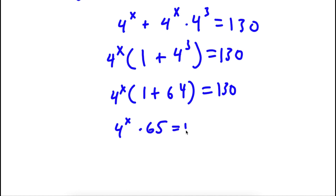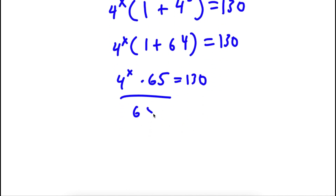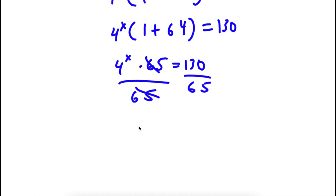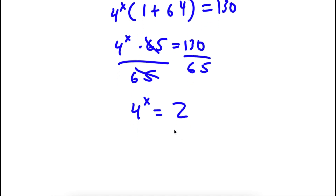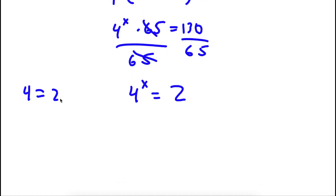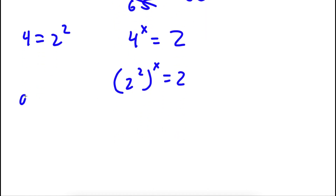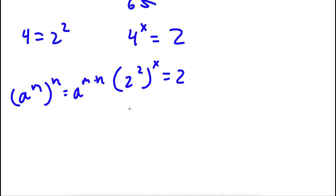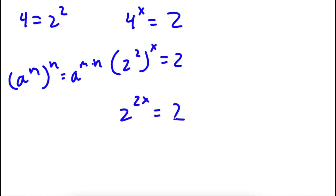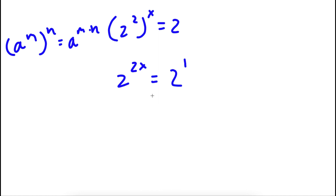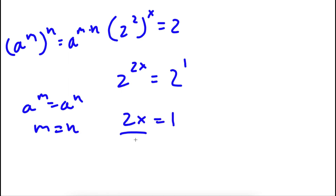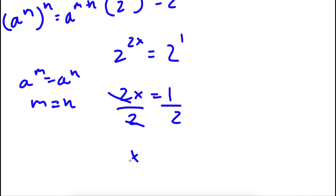So 4 to the power of x times 65 is equal to 130. Dividing both sides by 65, I'm left with 4 to the power of x is equal to 2. Now, 4 is the same thing as 2 squared, so I have 2 squared to the power of x is equal to 2, which gives 2 to the power of 2x is equal to 2. Since the bases are equal, 2x is equal to 1, and dividing both sides by 2, x is equal to one half.